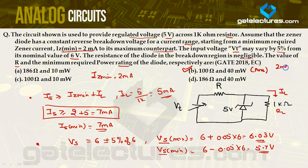This was a 2-mark question in the GATE 2018 examination, carrying −0.66 negative marking. It is a very good and well-crafted question from the GATE exam.